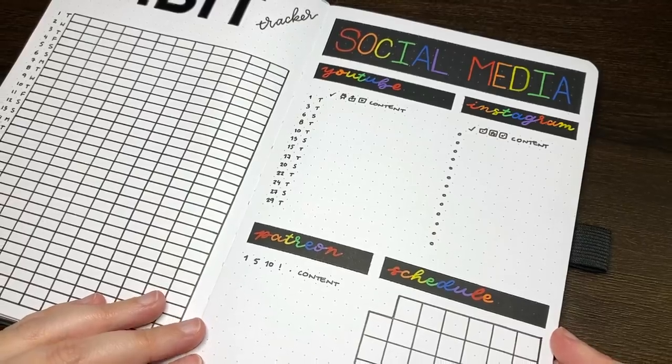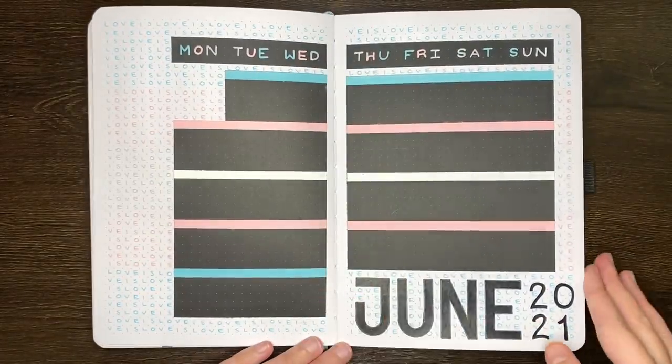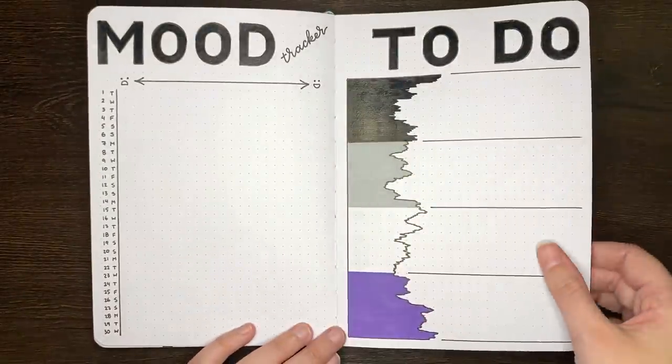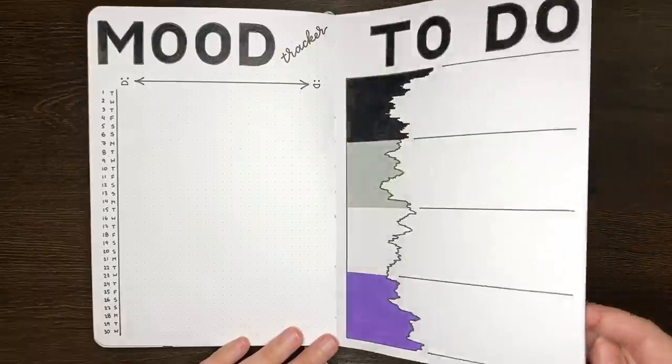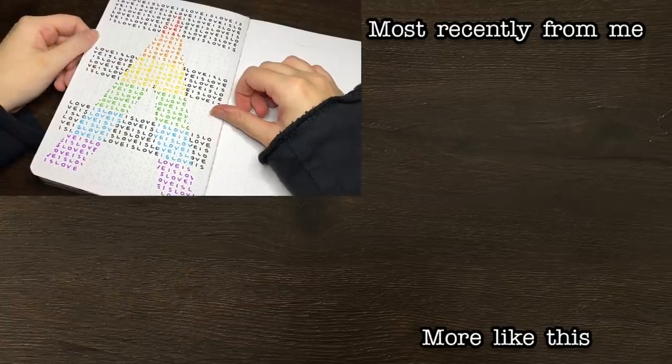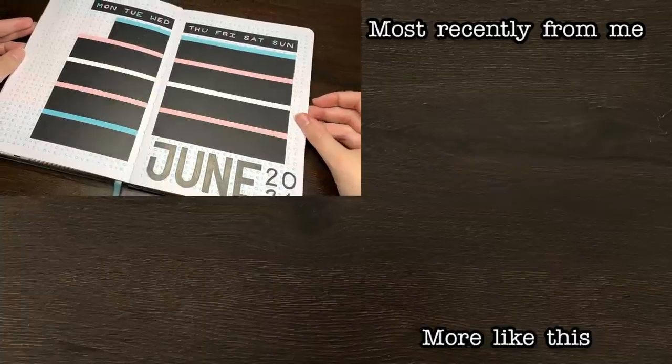For now though, we're on to the flip through, so we have my quote and cover page, my monthly log, mood tracker and monthly action steps list, my habit tracker and my social media scheduler. Certainly one of my more colourful monthly themes, but I am excited to see how using these spreads goes.